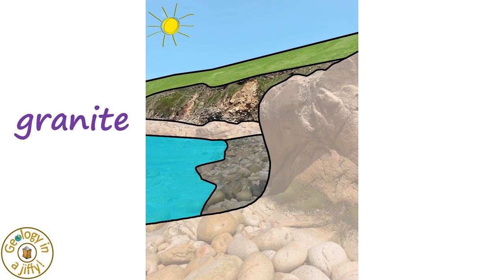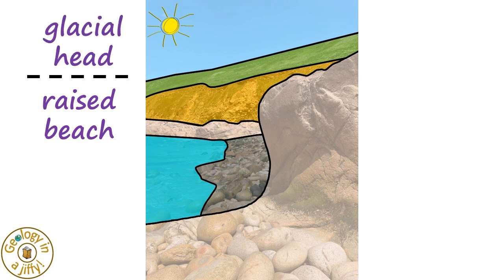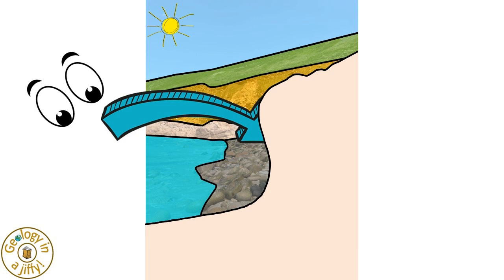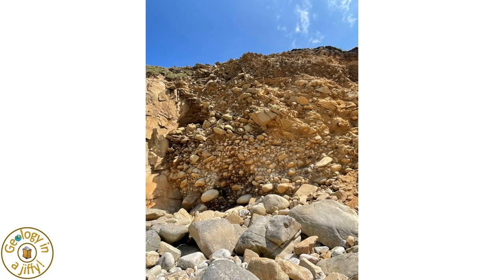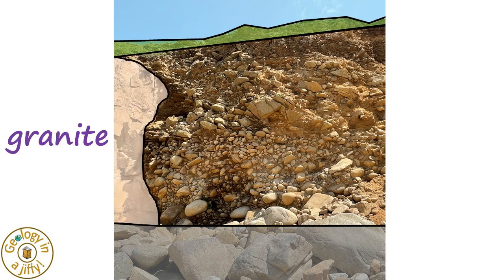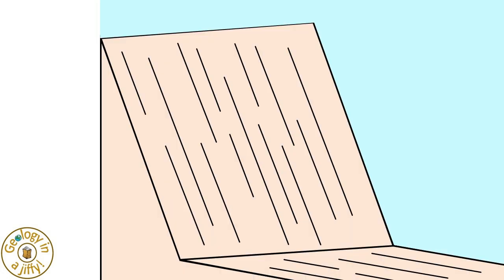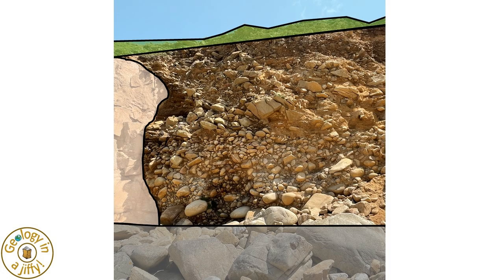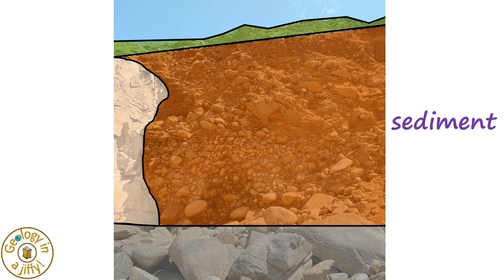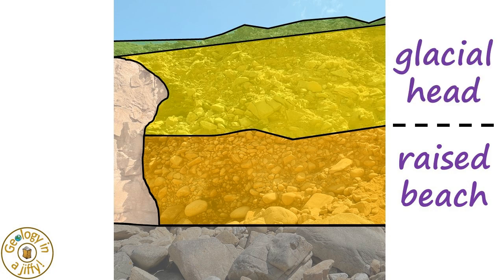The granite can also be seen on the far shoreline, bordered by steeply dipping cliffs within which we can see raised beach deposits overlaid by glacial head material. Looking behind this outcrop into the cove itself we see the cliff face: fallen cliff material forms the beach, with a steep granite scarp to the left. The remainder of the cliff side is composed of sediments, with raised beach deposits forming the lower half, overlain by glacial head deposits.